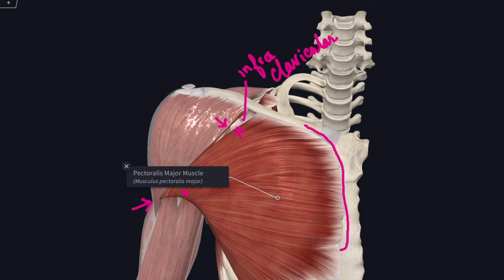The upper border of the pectoralis major muscle is separated from the anterior border of the deltoid muscle by a small triangle known as the deltopectoral triangle or infraclavicular triangle. The lower rounded twisted border forms the anterior fold of the axilla.